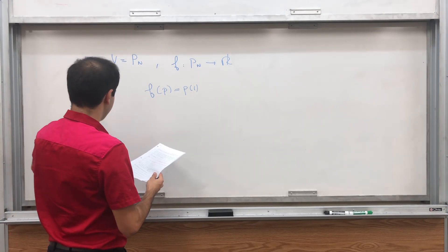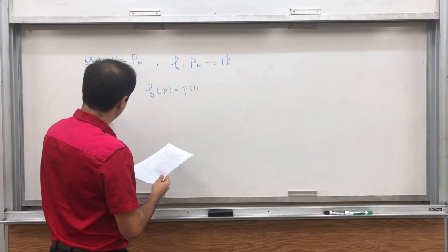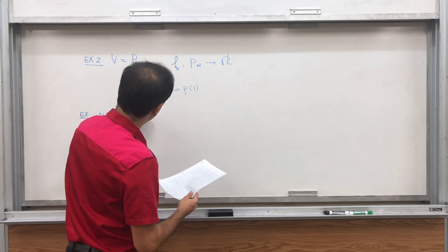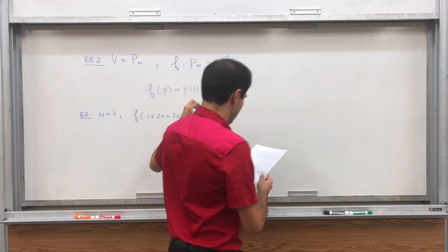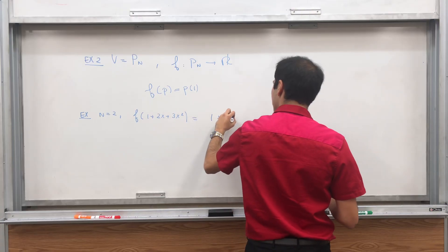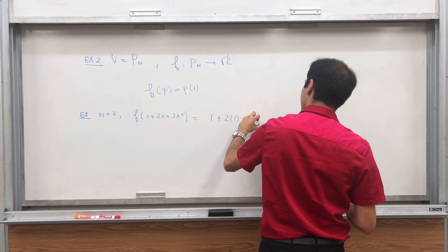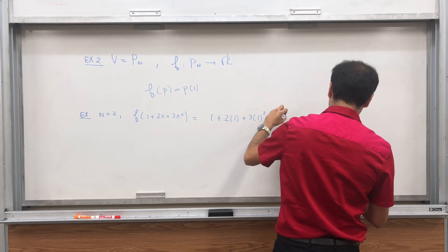And just to give an example, if n equals 2, then F of 1 plus 2x plus 3x squared is 1 plus 2 times 1 plus 3 times 1 squared equals 6.